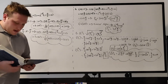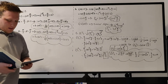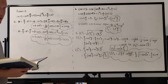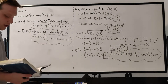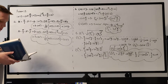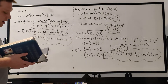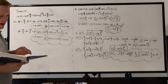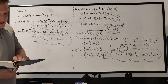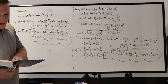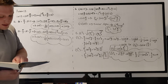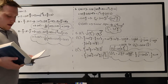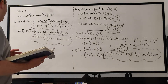For this problem, it references problem 3.2, which states that the spin-up state of a spin-1/2 particle along the axis specified by the unit vector n equals sine(θ)cos(φ) î plus sine(θ)sin(φ) ĵ plus cos(θ) k̂, with theta and phi defined as follows.